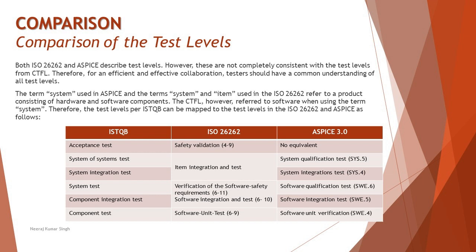Therefore, the test levels from ISTQB can be mapped to the test levels in ISO 26262 and ASPICE as follows. On the left, the first column lists the various test levels from the foundation: acceptance test, system test, system integration, and system of systems — followed by component integration testing and component testing.